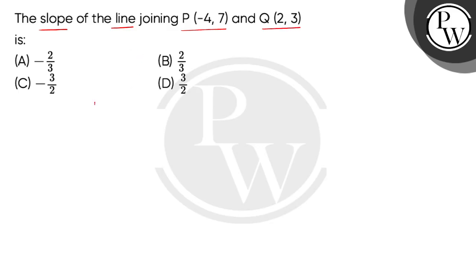So children, given us two points whose coordinates are (-4, 7) and the second point Q, its coordinates are given (2, 3).